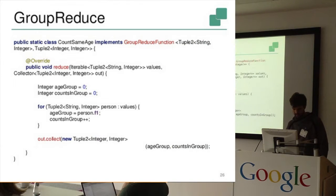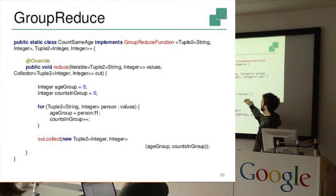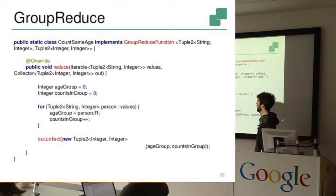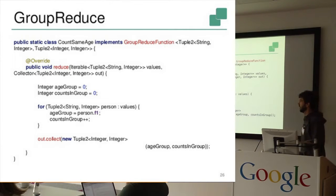And yes, and the reduce function which counts the same age looks like this. So you would receive the name and the age, and you would output the age group and the number of people in this age group. Yeah, and this is, I think, very simple function here, similar to the word count example.